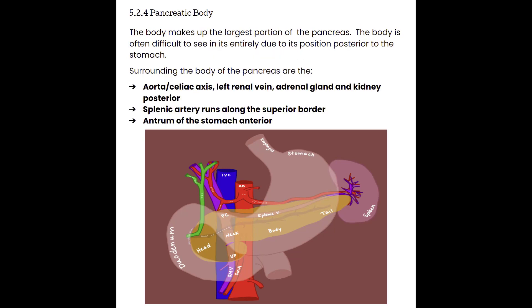Moving down the pancreas, we have the pancreatic body. The body is going to make up the largest portion of the pancreas, and is often the most difficult to see in its entirety due to its position posterior to the stomach. Most of the pancreas is made up by the body, and so it is not uncommon to have to say 'pancreas area' because the stomach or other bowel is blocking visualization.